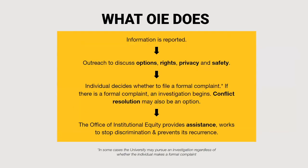The Office of Institutional Equity provides assistance, works to stop discrimination, and prevent its reoccurrence. They can only provide assistance if information is reported, and it is everyone's duty as members of the MU community to continue to make Mizzou an equal opportunity and inclusive place for everyone. When working with the Office of Institutional Equity, an individual can decide to file a formal complaint with an investigation and/or discuss options, rights, privacy, safety, and conflict resolution for those involved.